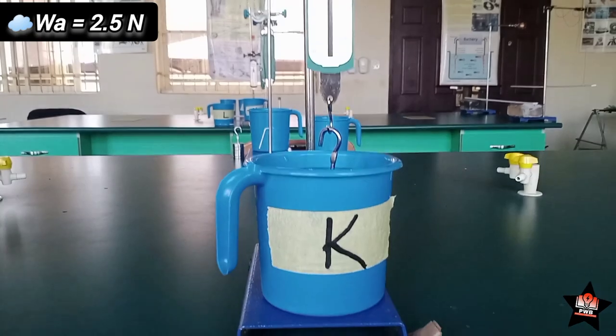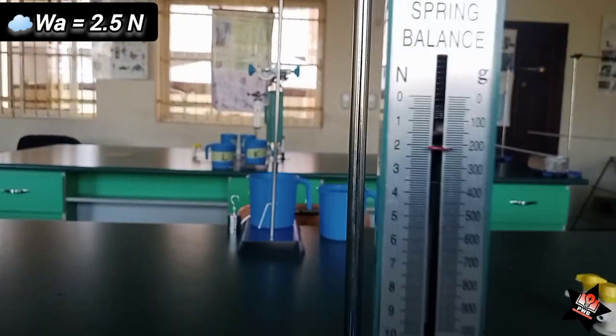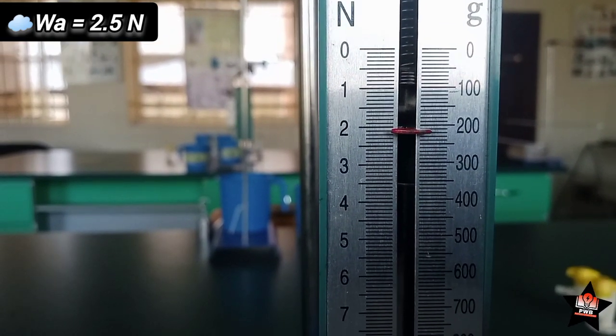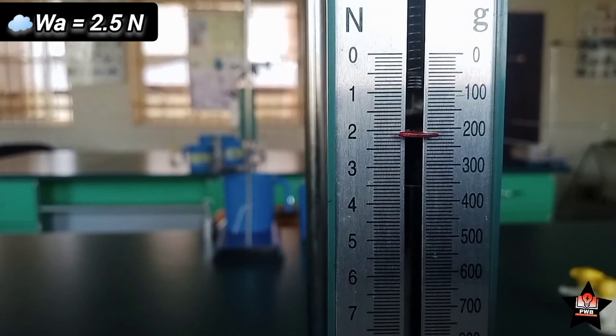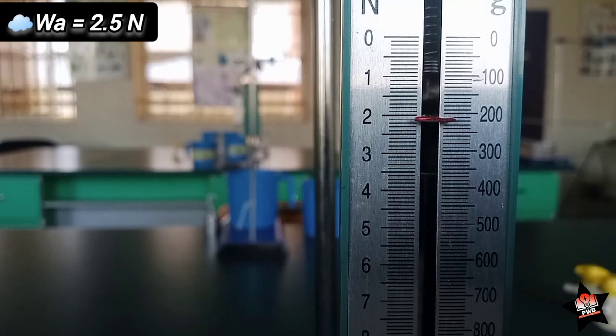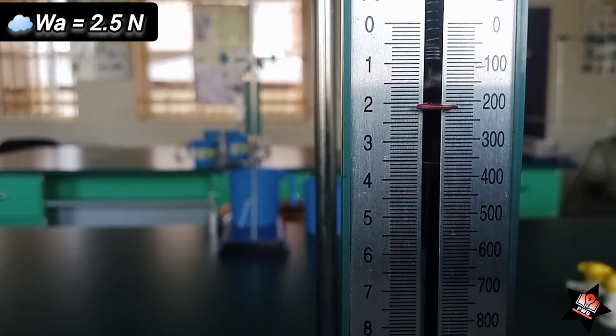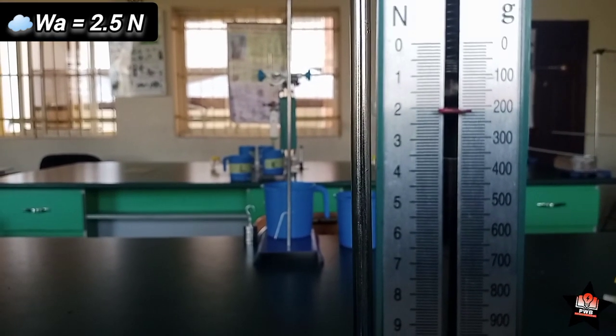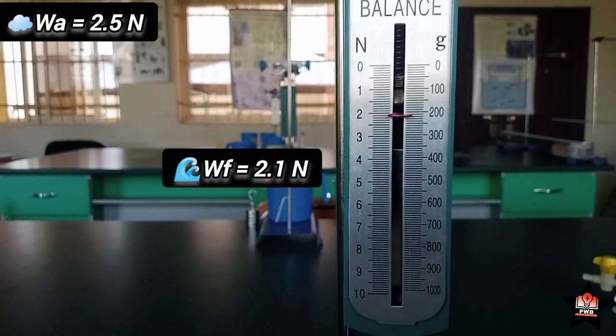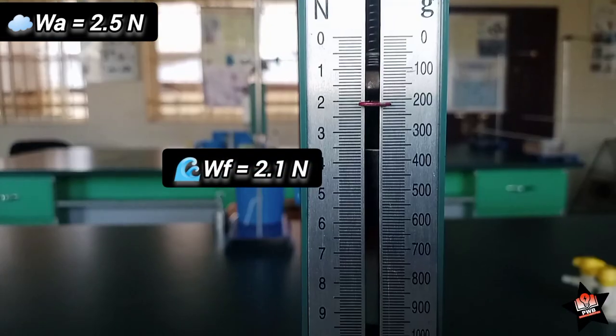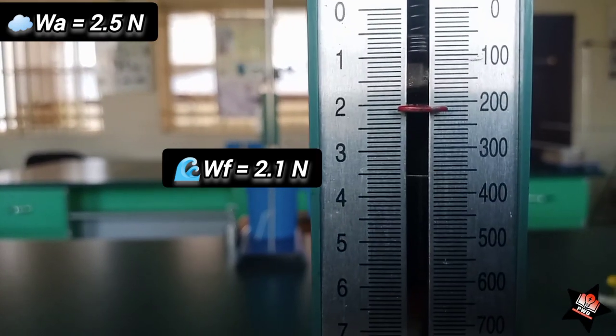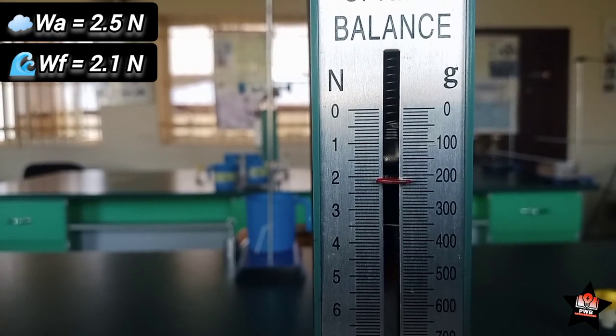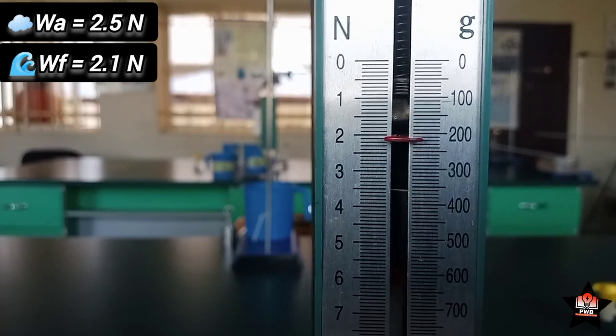So, let's see what our scale, our spiral spring is reading. Good. What do you see? The spiral spring is reading 210.5 grams and it is reading 2.1 Newton. Yeah, 2.1 Newton. Let me take that closer. That is 2.1 Newton. Good. So, 2.1 Newton is what the spiral spring is reading. And this is our weight in the liquid.